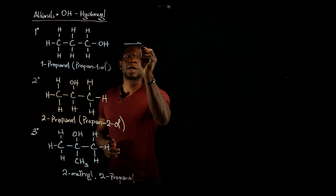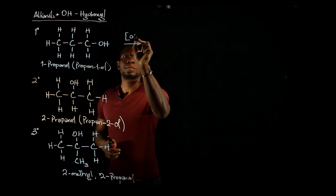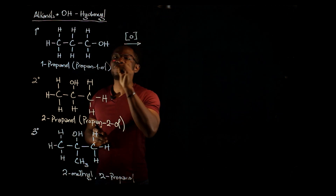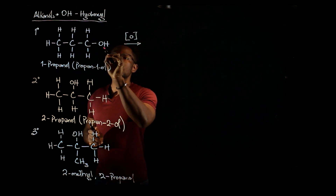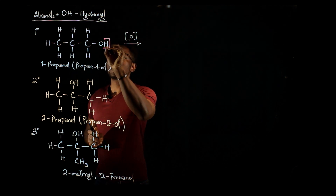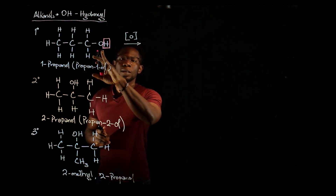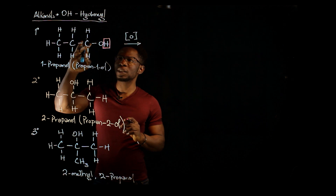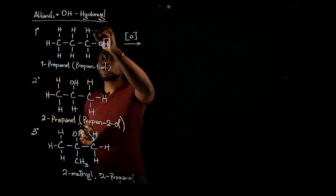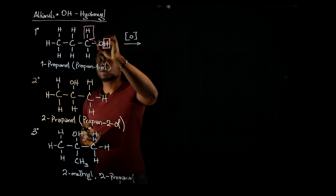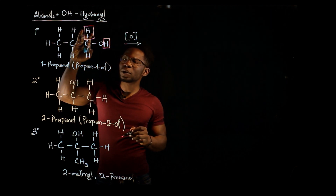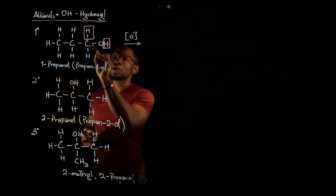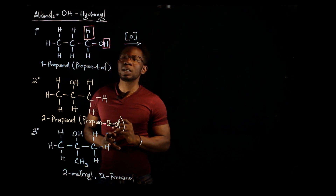If we oxidize a primary alcohol, what essentially happens is we lose the hydrogen atom attached to the hydroxyl group, and we also lose one of the free hydrogen atoms attached to the carbon that is attached to the hydroxyl group. The bond that is lost between the carbon atom and the hydrogen atom is then used to form a double bond with the oxygen.